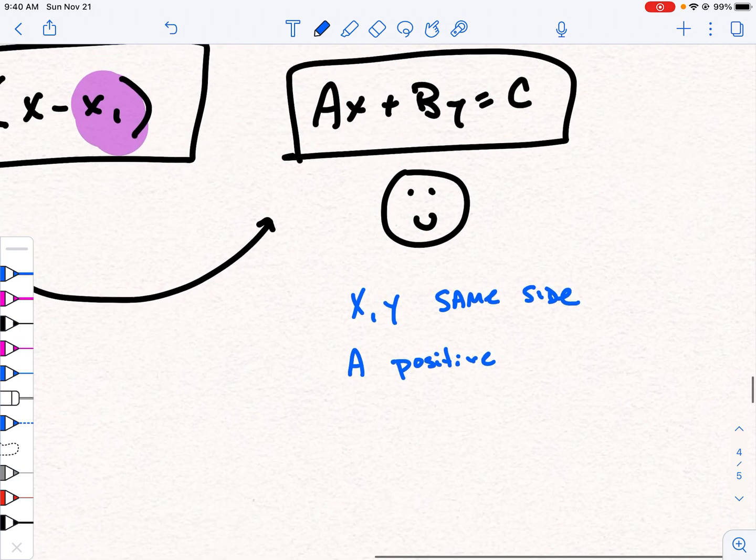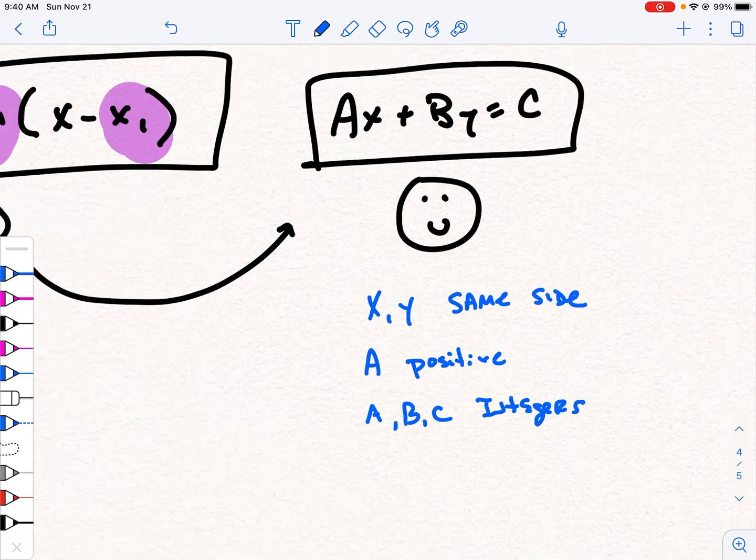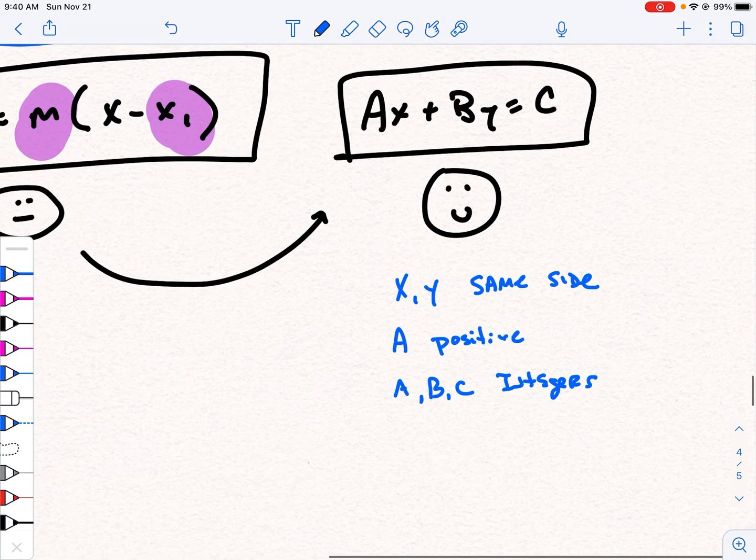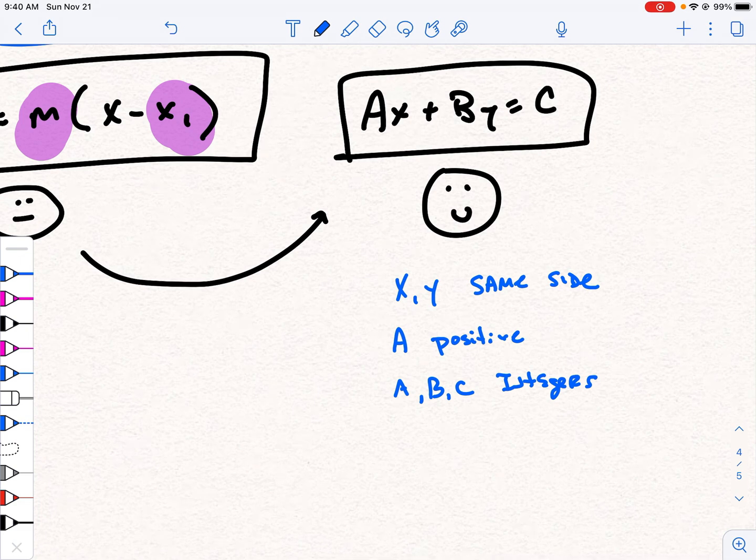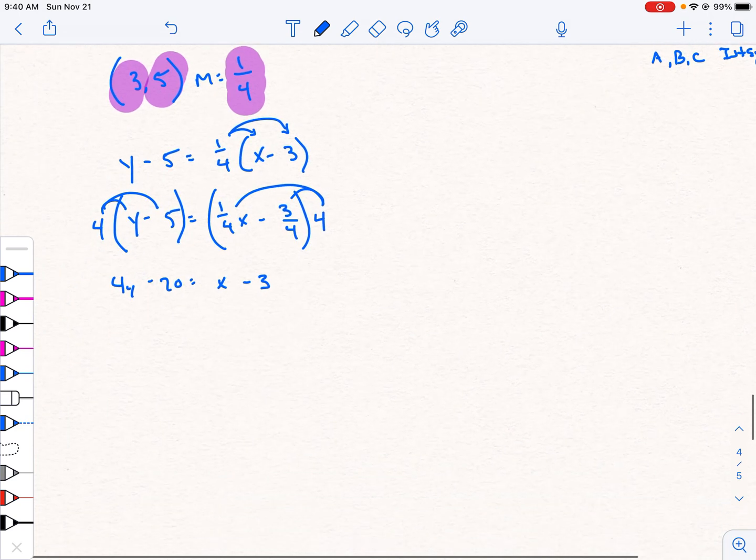And we're generally going to have your a, b, and c be whole numbers. Or I guess we'd call them integers. So a, b, and c will be integers. Different teachers are going to have different specifics. But that's the general idea. Get the x and y on the same side. Make a positive. And get a, b, and c to be integers. And that will be what we would consider standard form.